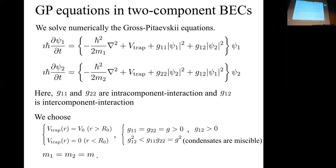I extend the study of the formation of the Onsager vortex to a two-component BEC. This equation is the Gross-Pitaevskii equation for two-component BEC. This term is the interaction between atoms of the same component, and we call this the intra-component interaction. This fourth term is the interaction between different component atoms, and we call this the inter-component interaction.